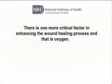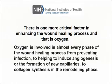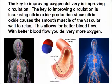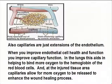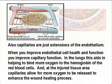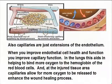There is one more critical factor in enhancing the wound healing process and that is oxygen. Oxygen is involved in almost every phase of the wound healing process, from preventing infection to helping to induce angiogenesis or the formation of new capillaries, to collagen synthesis in the remodeling phase. The key to improving oxygen delivery is improving circulation. The key to improving circulation is increasing nitric oxide production, since nitric oxide causes the smooth muscle of the vascular wall to relax, allowing for better blood flow and delivery of more oxygen. Also, capillaries are just extensions of the endothelium, and when you improve endothelial cell health and function you improve capillary function. In the lungs this aids in helping to bind more oxygen to the hemoglobin of the red blood cells, and at the injured tissue area capillaries allow for more oxygen to be released to enhance the wound healing process.